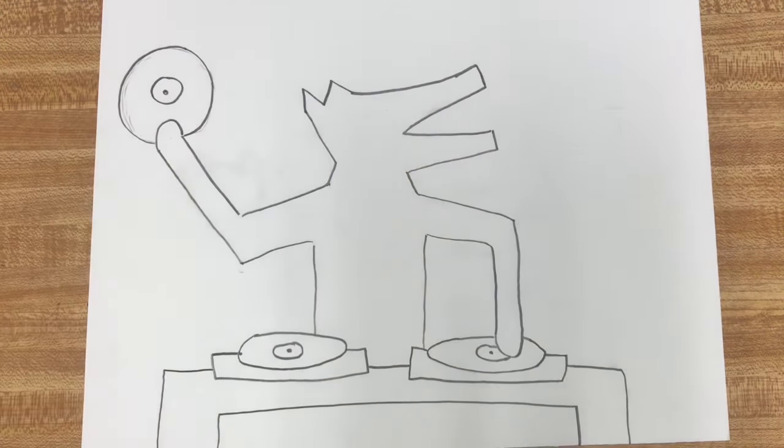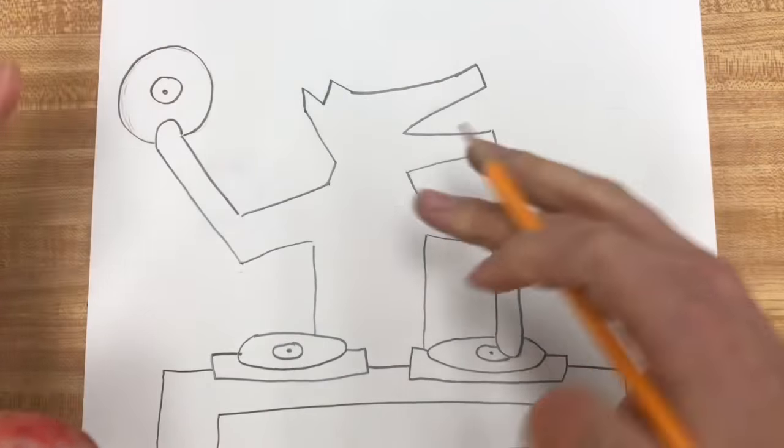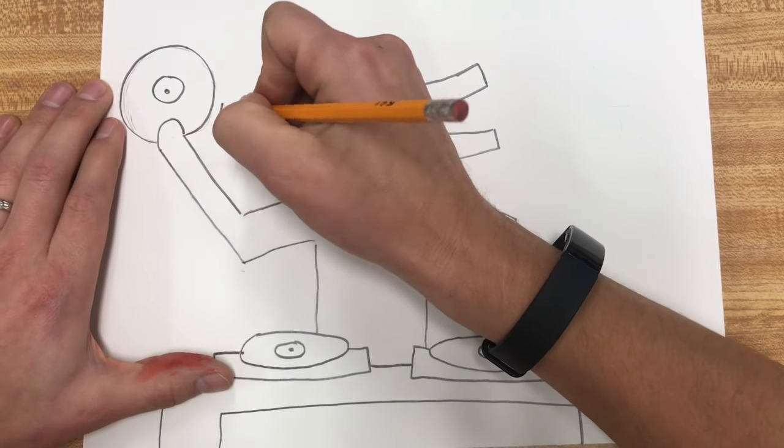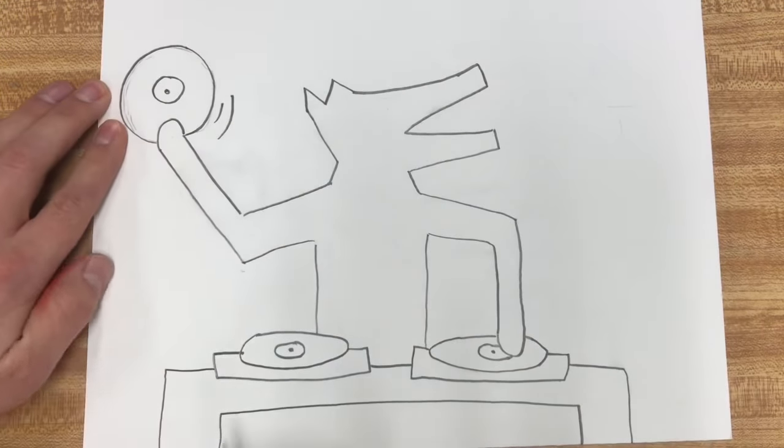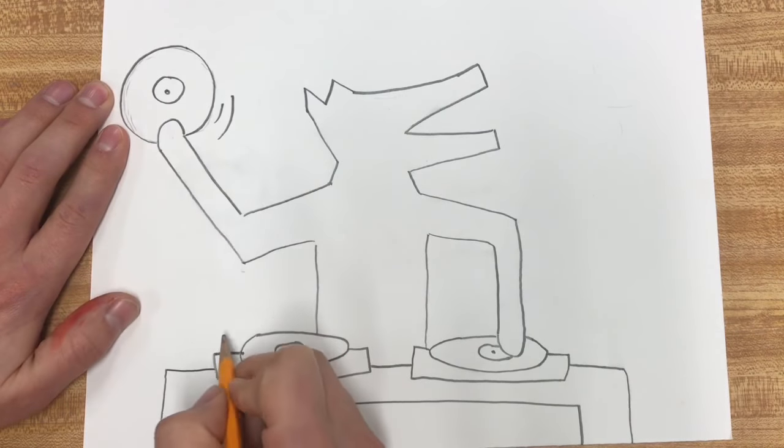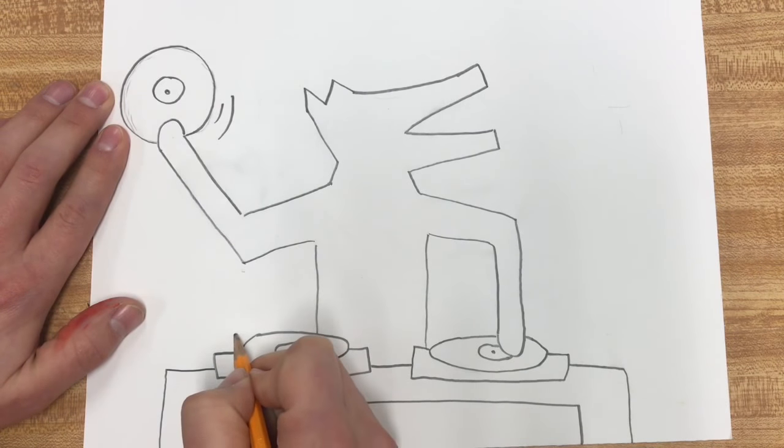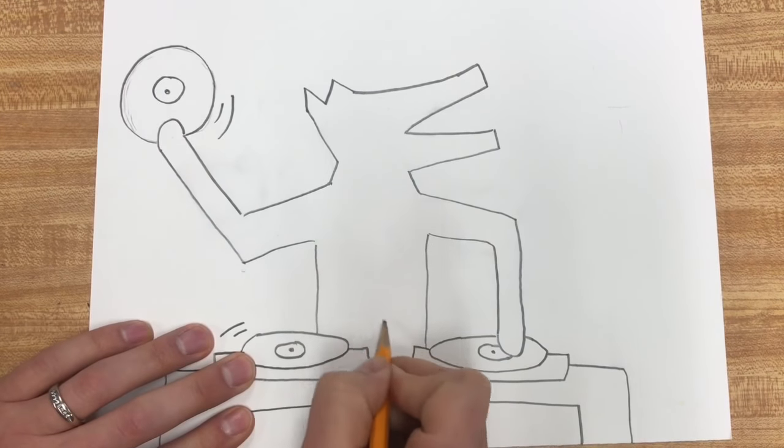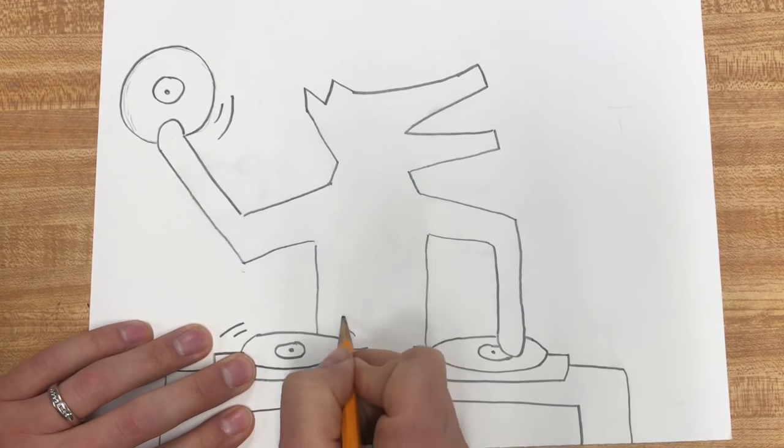Okay, we got most of the stuff except we need some of those action lines that Keith Haring is very famous for. I'm gonna do one, two on that side. I'm gonna do a little one over here, one, two, and then right in between his body, one, two.